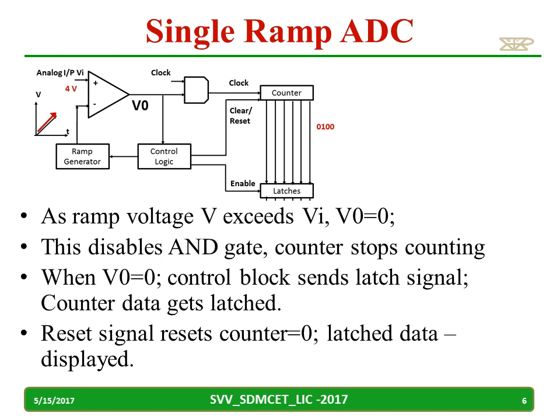As the ramp voltage exceeds the input VI, the comparator output V0 will become low. When the output becomes low, the clock will not reach the counter and the counter stops counting. The control logic will then send an enable signal to the latches so that the counter output can be latched. Then a clear or reset signal will be sent to the counter.